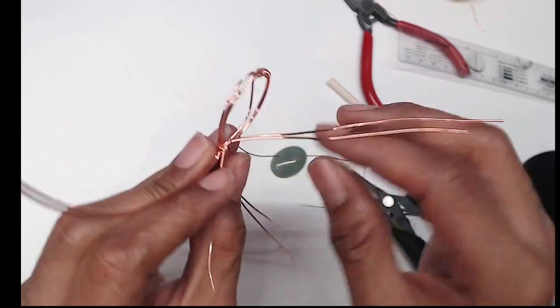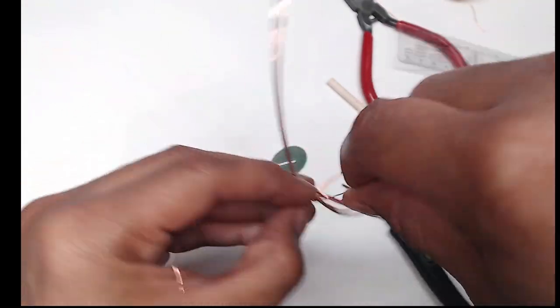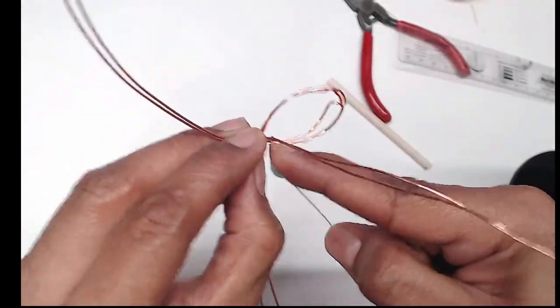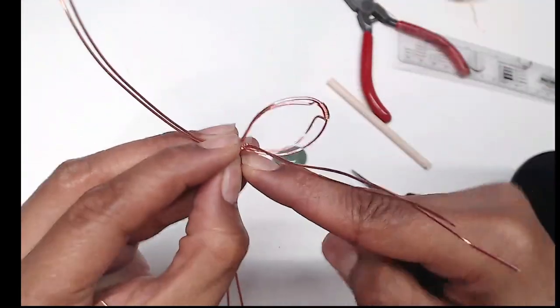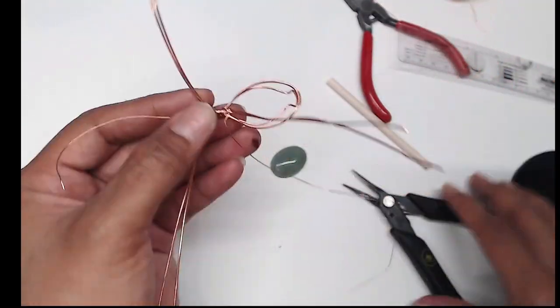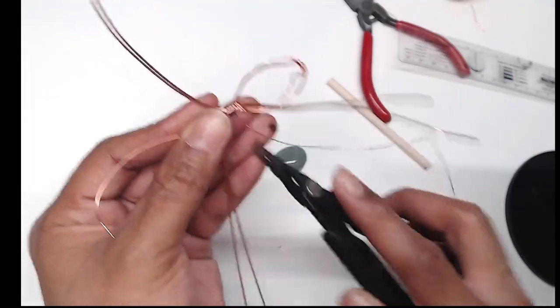So do about two loops around both of those wires. After that do one or two loops around with just one wire of your choice and this will lock it in.